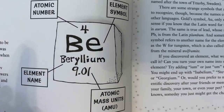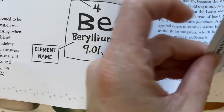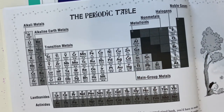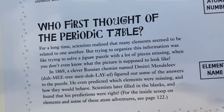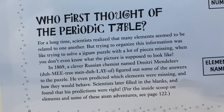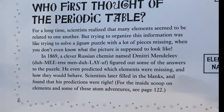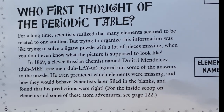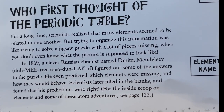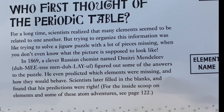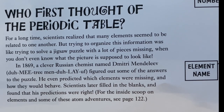Here's beryllium — it points out where you can find the atomic number, the atomic mass, the name, and the symbol. On page 10 there's a picture of the periodic table, which you have a copy of in your notebook. For a long time, scientists realized that many elements seemed to be related to one another, but trying to organize this information was like trying to solve a jigsaw puzzle with a lot of missing pieces. In 1869, a clever Russian chemist named Dmitri Mendeleev figured out some of the answers. He even predicted which elements were missing and how they would behave, and scientists later found that his predictions were right.